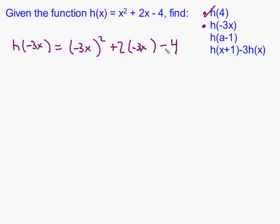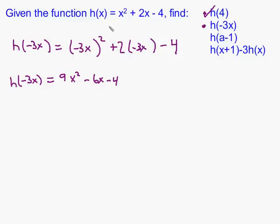Notice we're going to get a new function. We're not keeping the function the same and evaluating it as a number — this is a completely different kind of problem. Our intent is to get a whole new equation. The negative 3 is being squared, which is negative 3 times negative 3, or 9. x is being squared. 2 times negative 3x is minus 6x, and then we subtract 4. So this new function was obtained by replacing x everywhere with parentheses negative 3x.